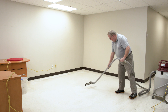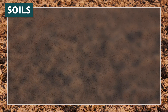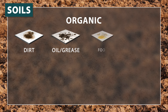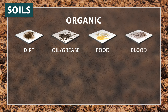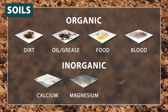Soils are categorized into two types. Organic soil includes dirt, oil, grease, food, and blood. Inorganic soil includes calcium, magnesium, and rust.